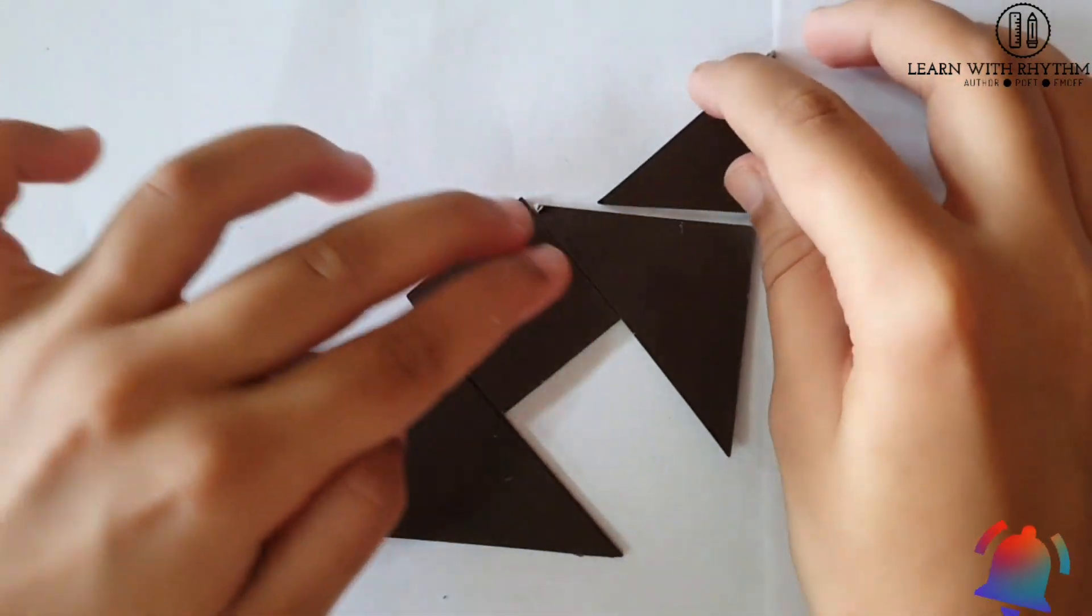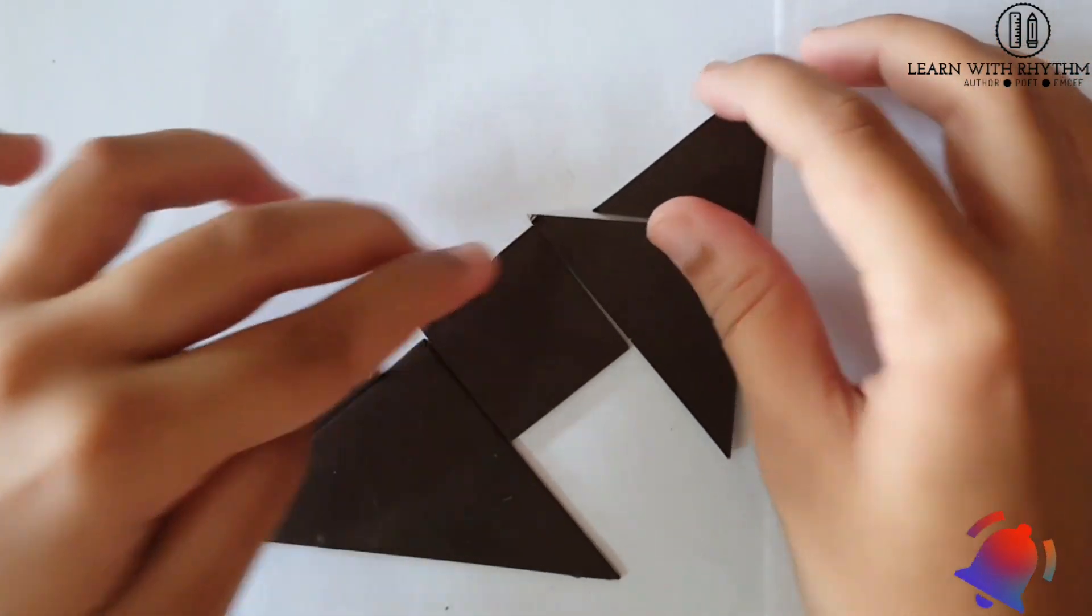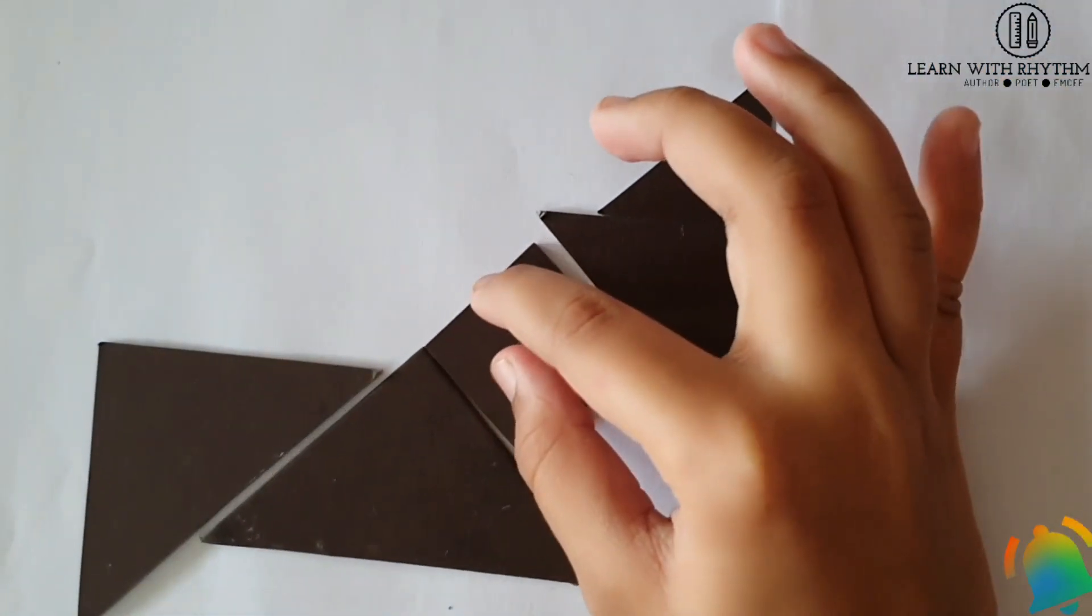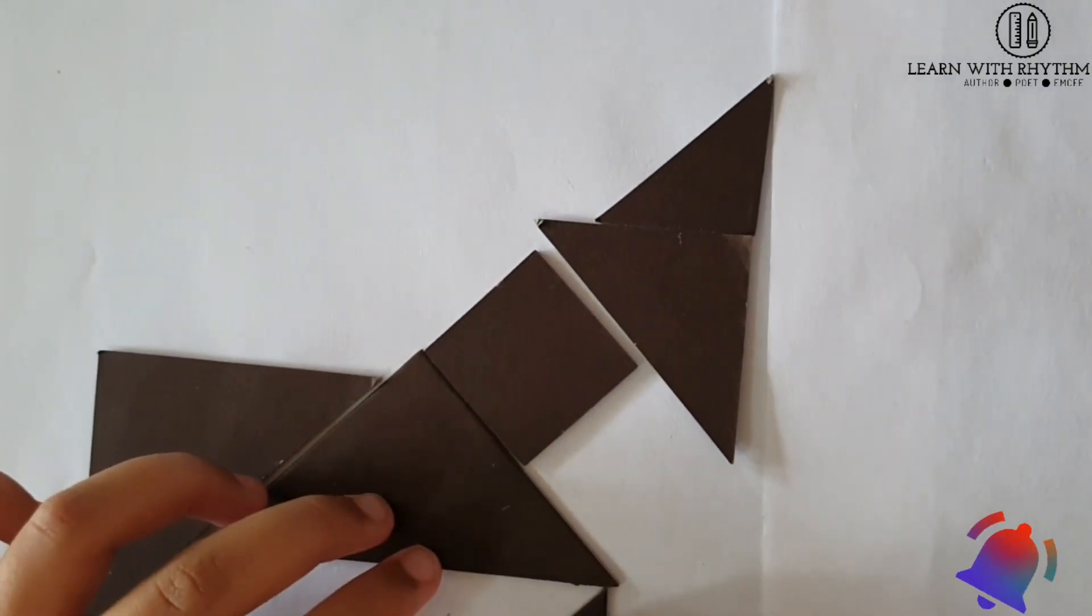Then we have its other body part. Now it's taking the shape of our unicorn. Now let's take this piece for its leg.